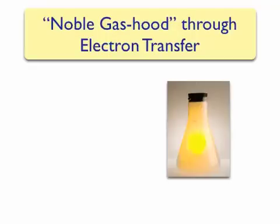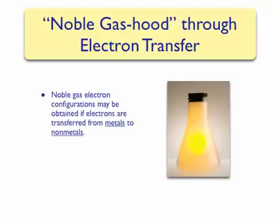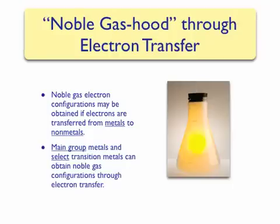As mentioned before, one way that atoms can obtain a noble gas electron configuration is through electron transfer. This tends to happen between metals and non-metals. We know that metals tend to form cations, or tend to lose electrons. They can lose these electrons to non-metals, which typically have high electron affinities. Noble gas electron configurations can be obtained for all of the non-metals, as well as main group metals and select transition metals.